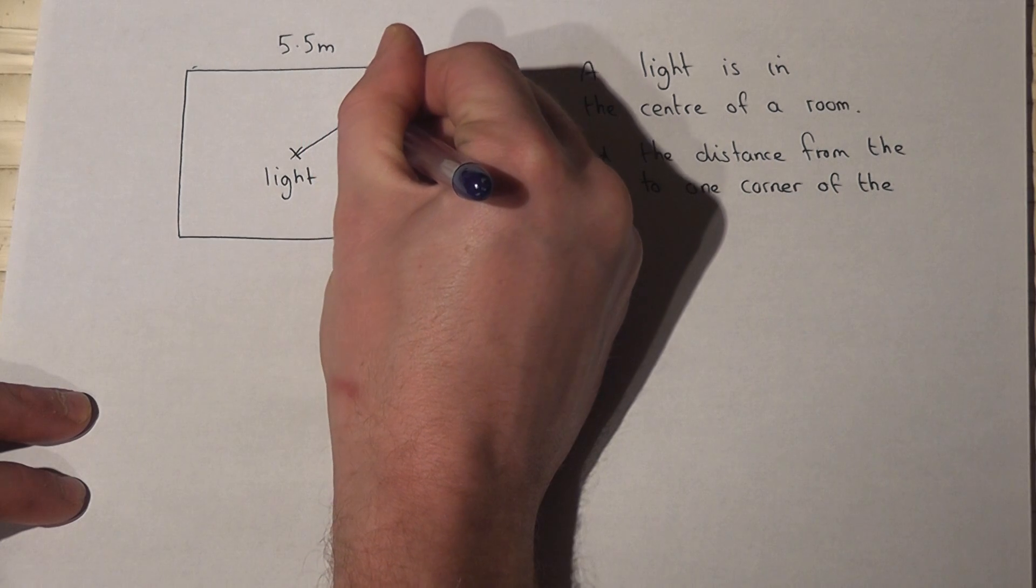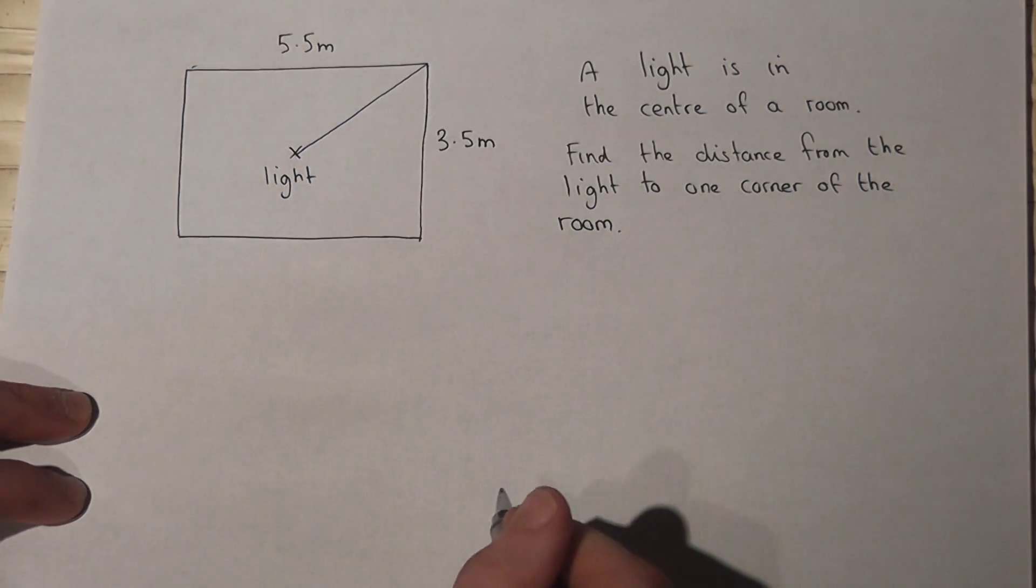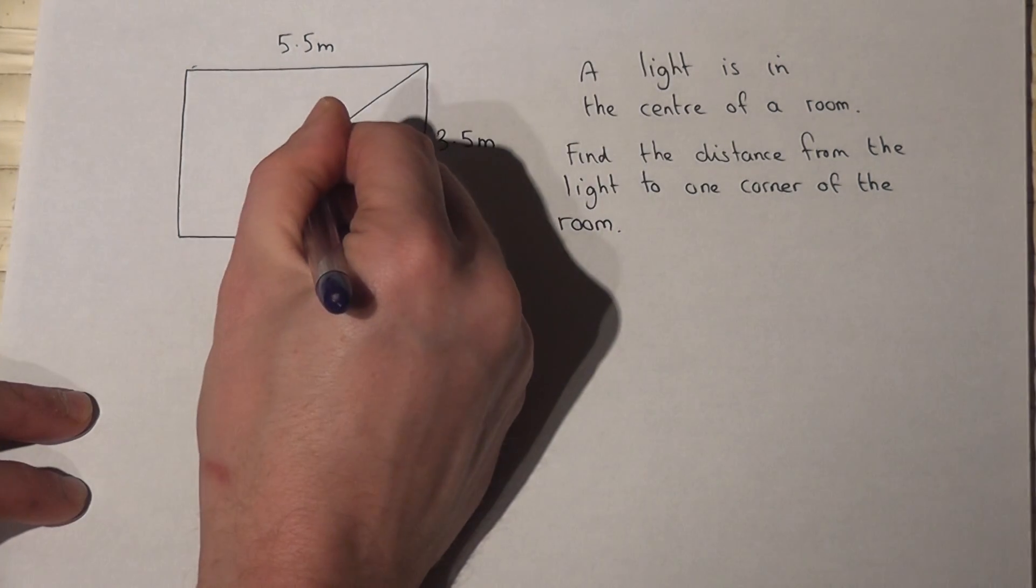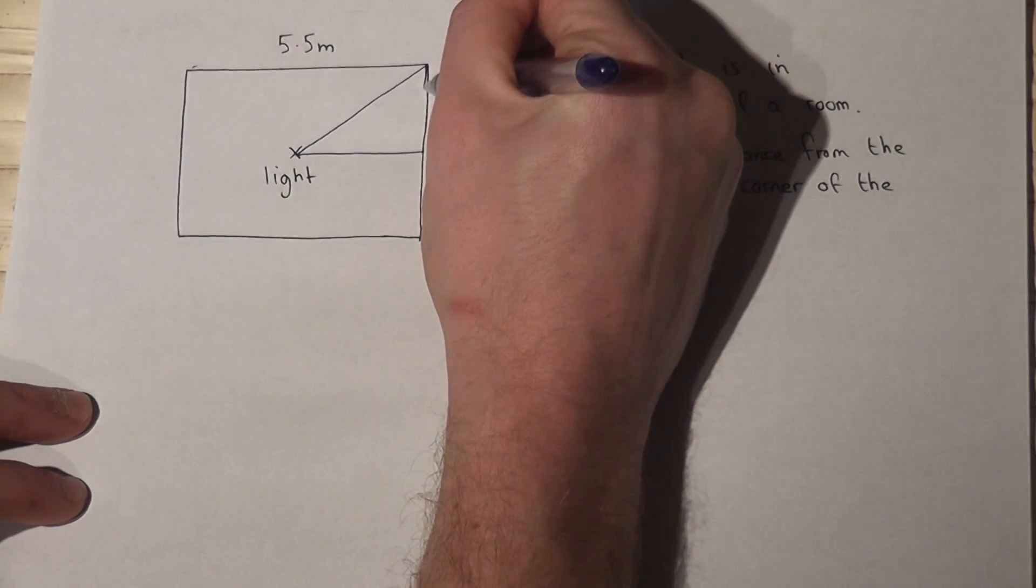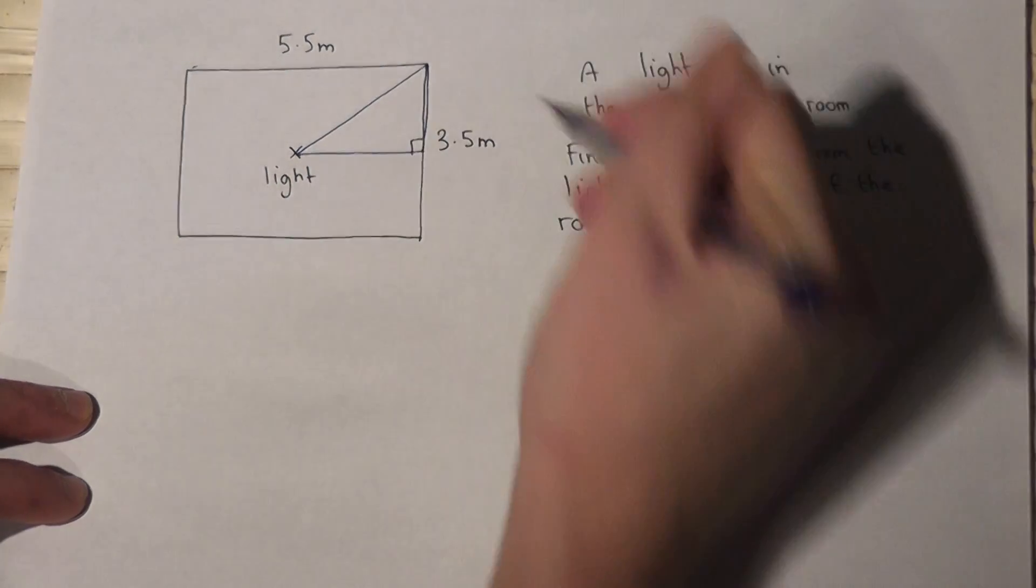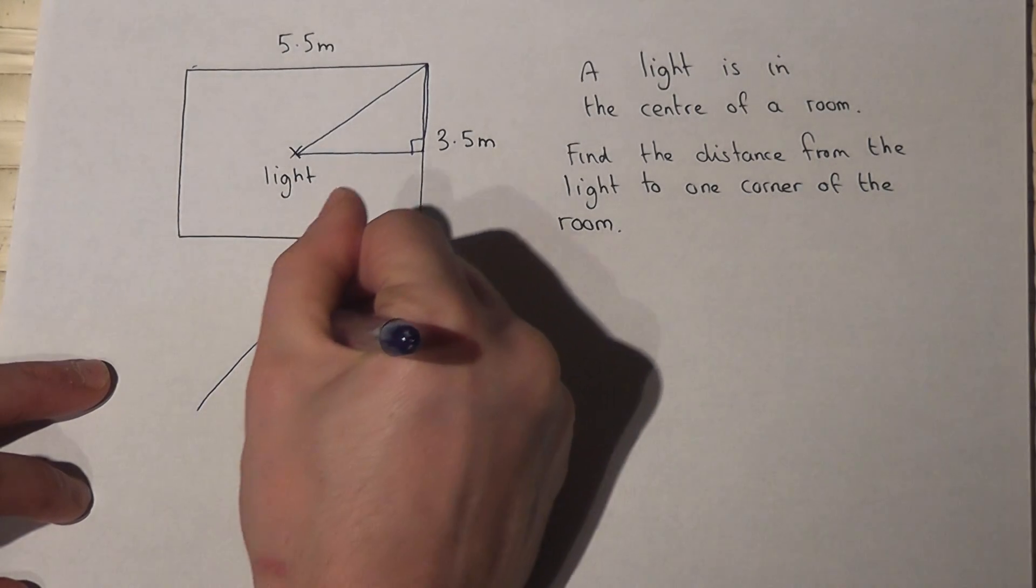So I want to find out what that distance there is. Well, I can construct a right-angled triangle here which I'll sketch below.